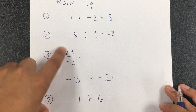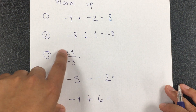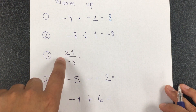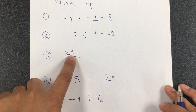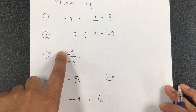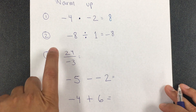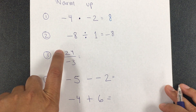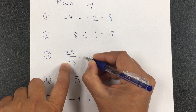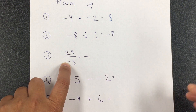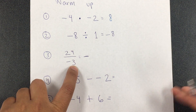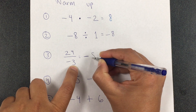Here we have a fraction, but when the number is bigger on top, that means we're going to get a whole number. So 24 divided by negative 3 — the signs are different, so the answer is negative — and 24 divided by 3 is 8, giving us negative 8.